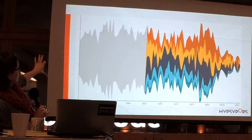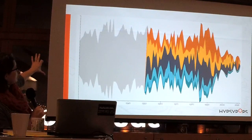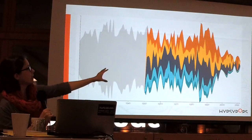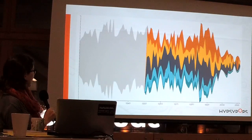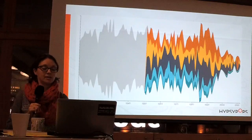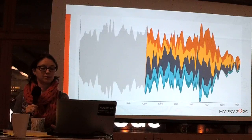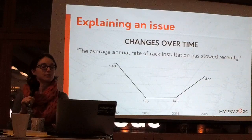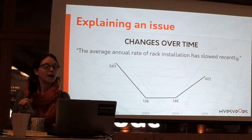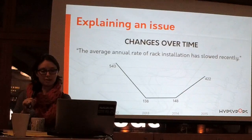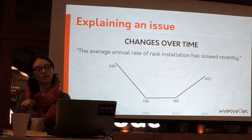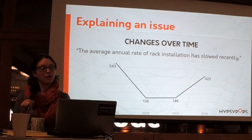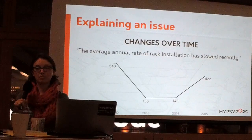By presenting it in this way, you invite the reader to look at it differently. Now the reader sees: more or less the same, until something different happens at the end of the graph. Changes over time — average annual rate of rack installation has slowed recently. This is a line graph.